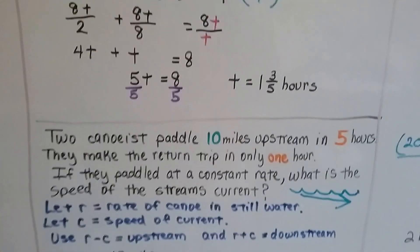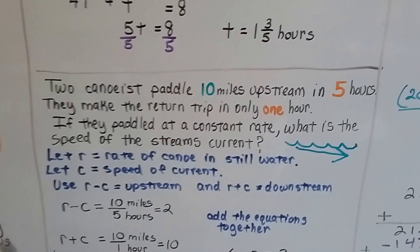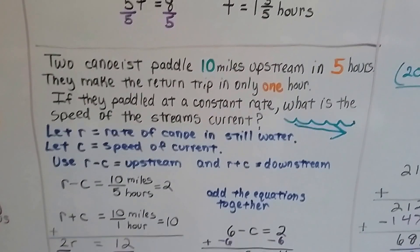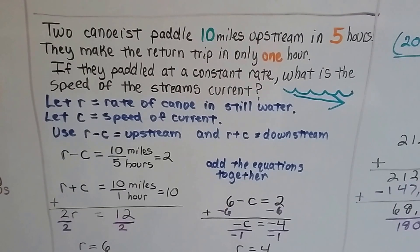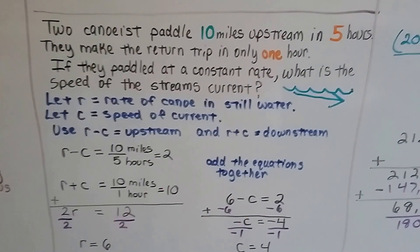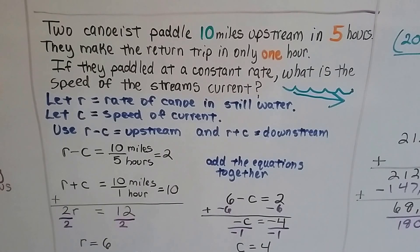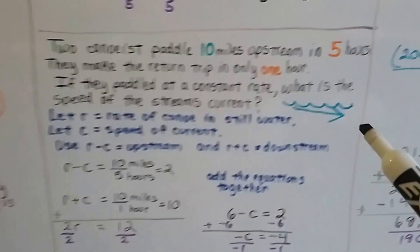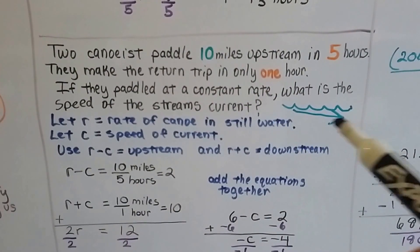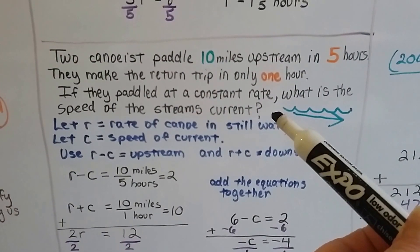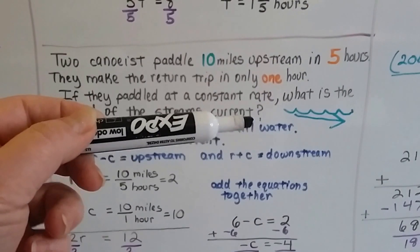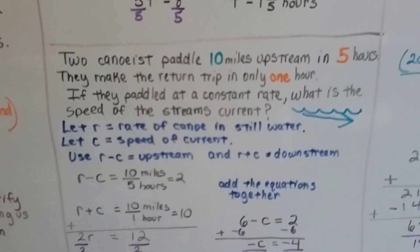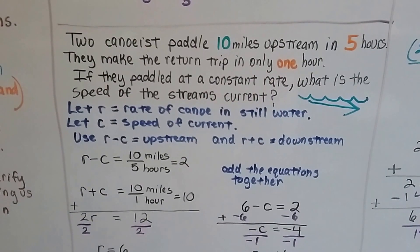Let's try this one. We have two canoeists, and they paddle ten miles upstream in five hours, and they make the return trip in only one hour. Well, if they paddled at a constant rate, what is the speed of the stream's current? So, when they were going upstream, they were paddling against the current, so it took them longer. It took them five hours. It was harder. When they were coming back on the return trip, it only took one hour because they were going with the current. So it was easier to paddle, and they went faster.